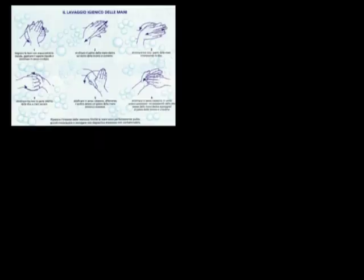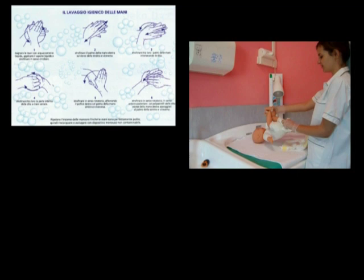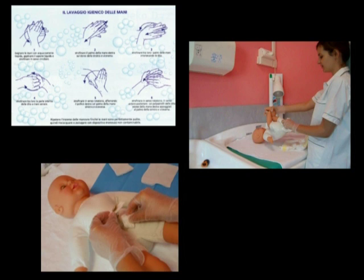Le infezioni derivanti dal cordone umbilicale possono essere prevenute tramite pochi ma importanti accorgimenti, quali il lavaggio sociale delle mani da parte dell'operatore o di chi viene a contatto con il neonato, l'igiene accurata del neonato, della sua cute e del cordone umbilicale e, non meno importante, la medicazione corretta di quest'ultimo.